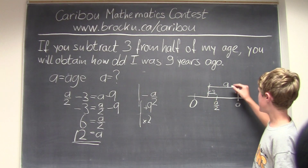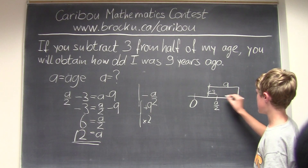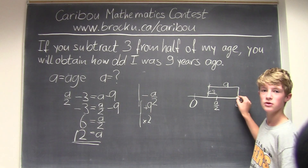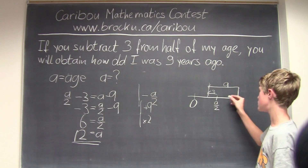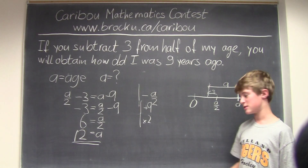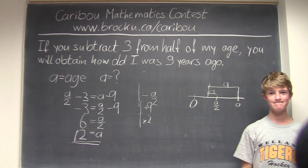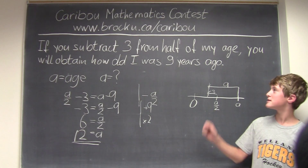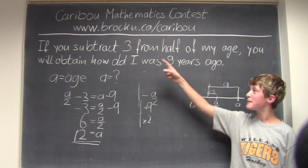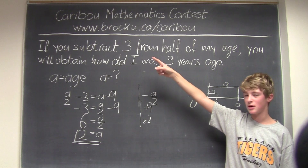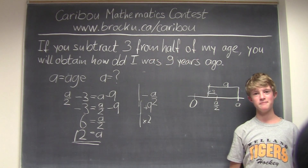So we do 9 minus 3 equals 6, and that is only half of the age. We multiply by 2 to get 12 — so the age is 12. If you'd like to know more about this contest, please visit our website at www.brocku.ca. Thank you.